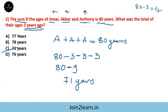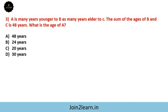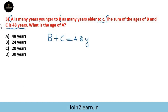Next question: A is as many years younger to B as A is many years elder to C. The sum of the ages of B and C is 48 years. B plus C is equal to 48 years.